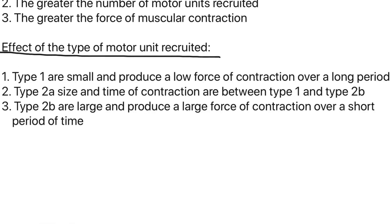Next, the effects of the type of motor unit recruited. Type 1 is small and produces a low force of contraction over a long period of time. Type 2a — the size and time of contraction are between type 1 and type 2b; that's all you really need to know about 2a. Finally, type 2b are large and produce a large force of contraction over a short period of time. You just need to memorize this.